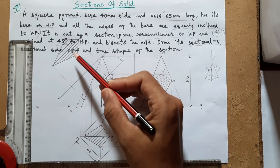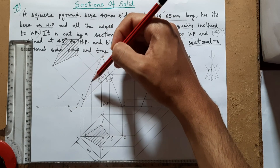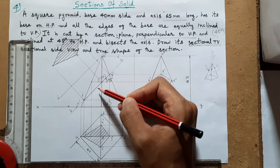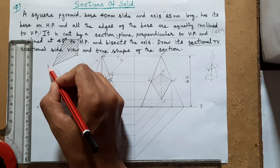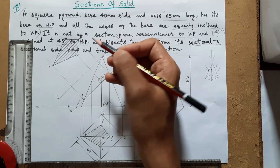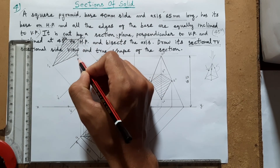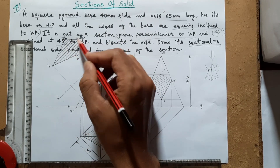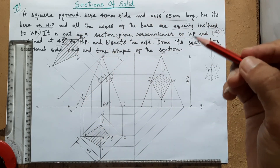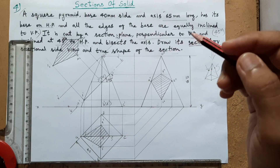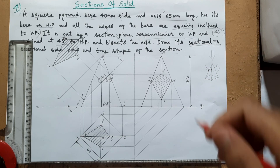Here I have drawn the true shape of the section, which is visible when viewed from the side. This new surface after cutting is this one. Notations: 1-suffix-1, 2-suffix-1, 3-suffix-1, 4-suffix-1. I hope you have understood. If you have any doubts please comment, and don't forget to like, subscribe, and share the channel. Thanks for watching everyone.